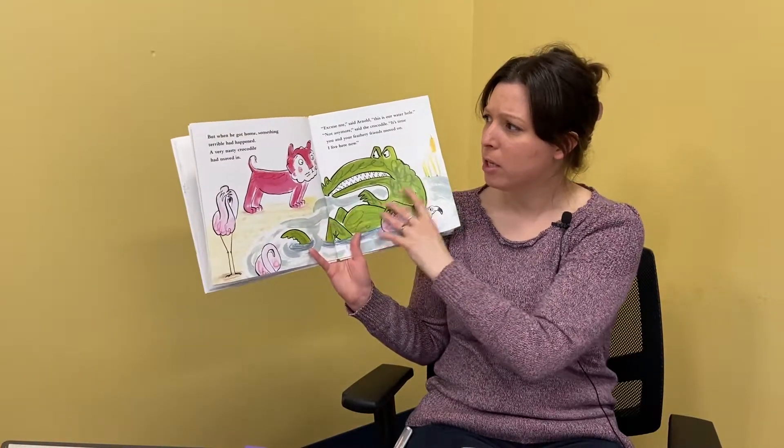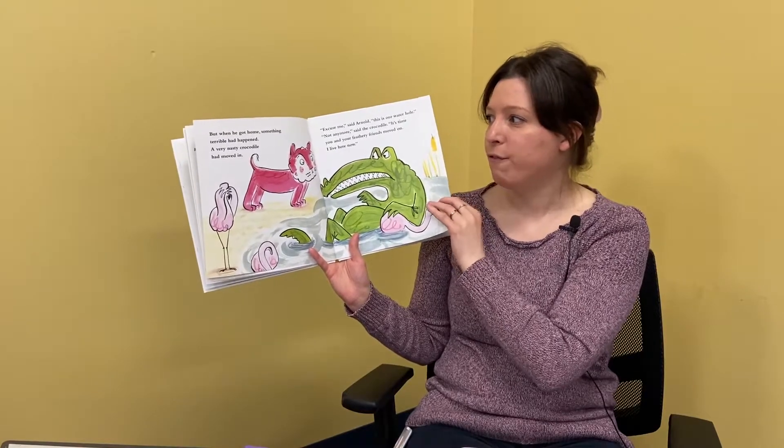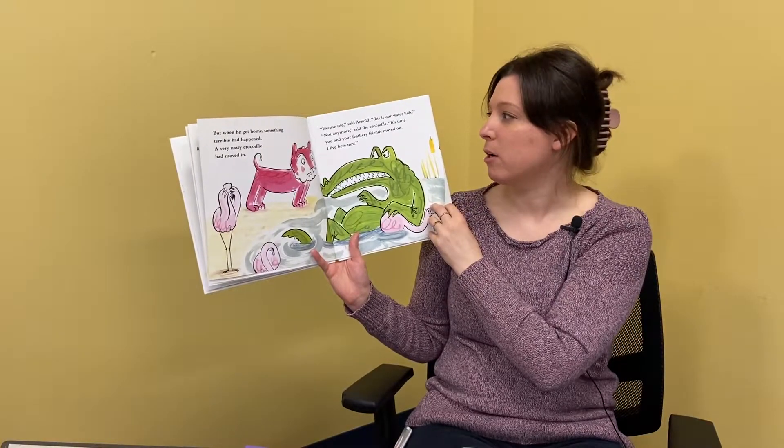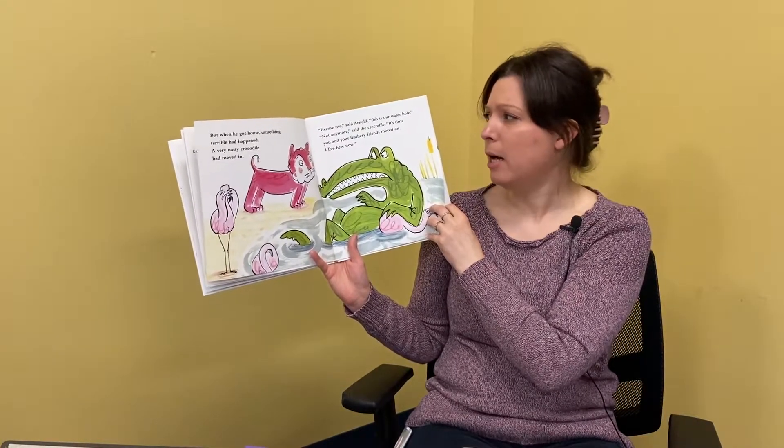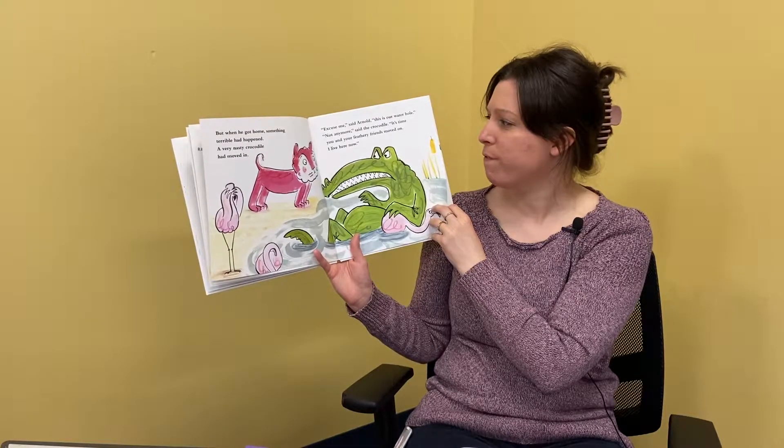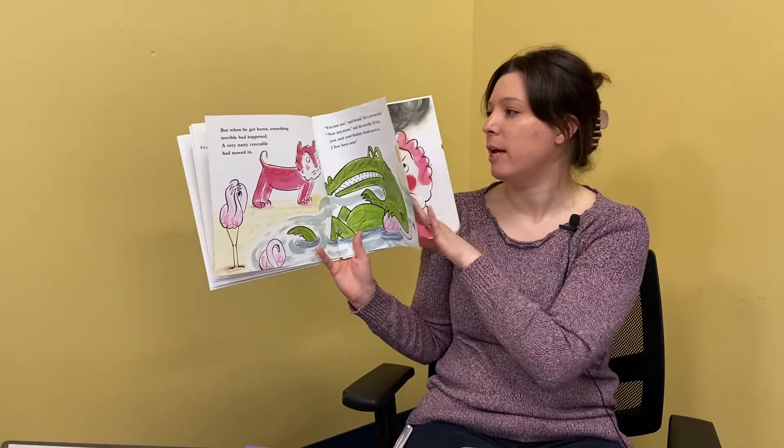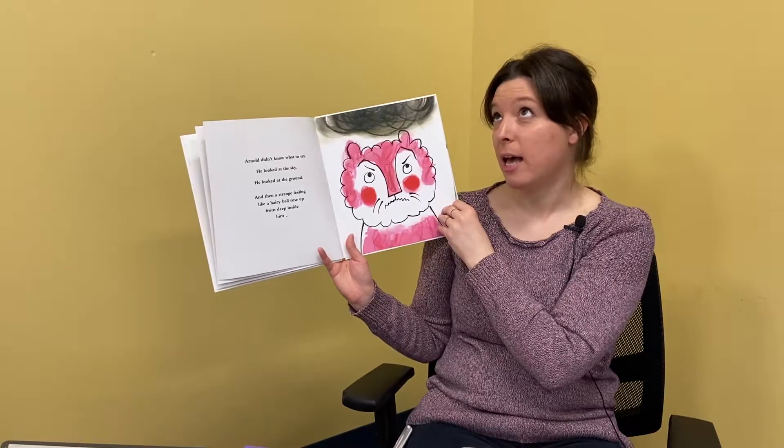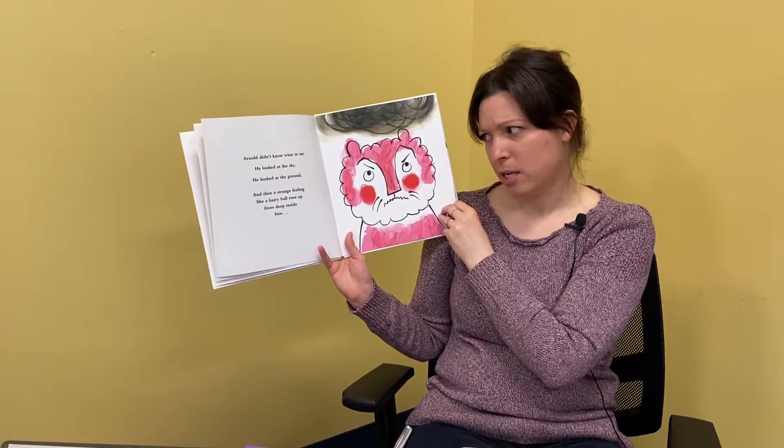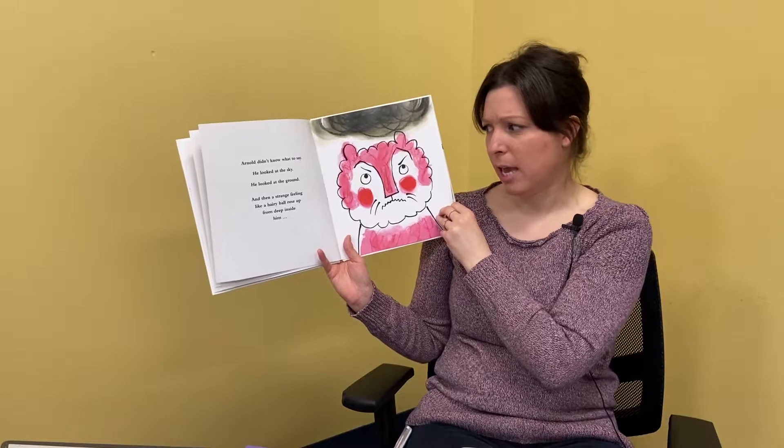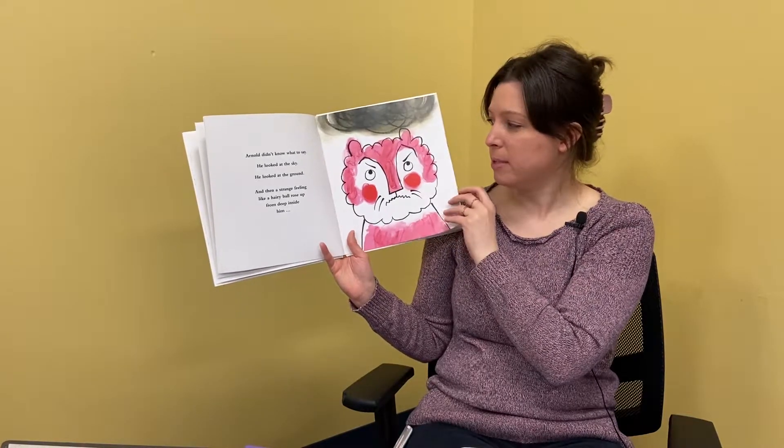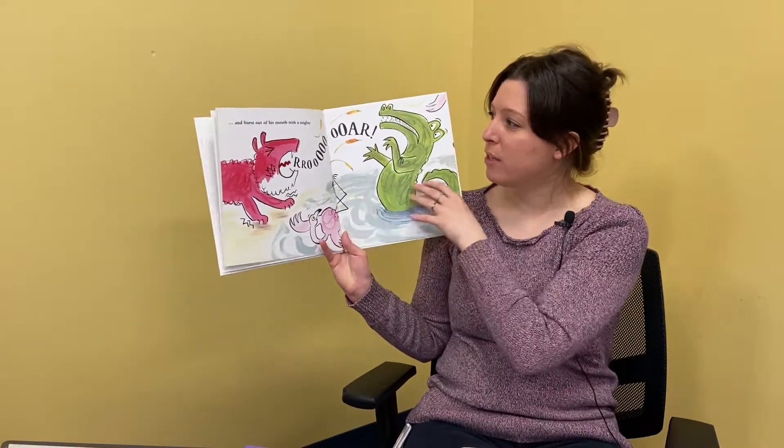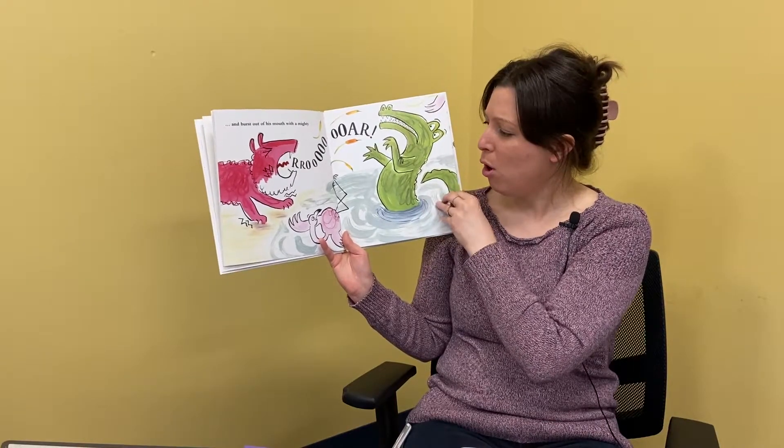But when he got home, something terrible had happened. A very nasty crocodile had moved in. Oh no. Excuse me, said Arnold. This is our waterhole. Not anymore, said the crocodile. It's time you and your feathery friends moved on. I live here now. Arnold didn't know what to say. He looked at the sky. He looked at the ground. And then a strange feeling like a hairy ball rose up from deep inside of him. Roar! And burst out of his mouth with a mighty ROAR!